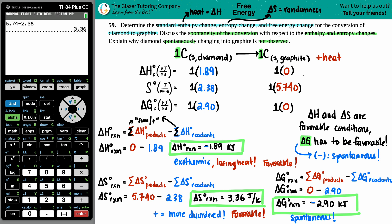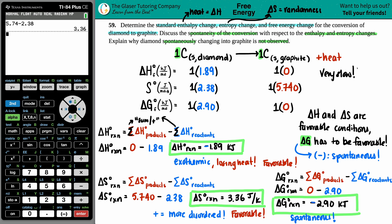Diamonds are forever in our lifetime because even though this conversion is happening, we'll be dead before we see it. This spontaneous reaction is extremely slow — the half-life of diamond is such a large number that you'd need to live for centuries to see the change. We never observe the conversion because it occurs at a very, very slow rate, so to us, diamonds are forever.